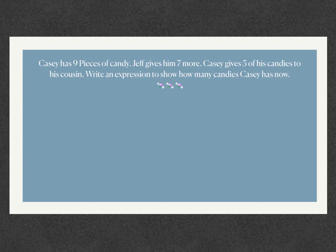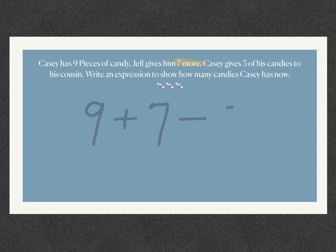Okay, so we know that Casey started with nine pieces of candy, and we know that Jeff gave him seven more. 'More' tells us we're going to add that seven to the nine — that gives us the total number of candies Casey had after Jeff gave him seven. However, Casey was kind enough to give five of his candies to his cousin, so we need to subtract five. Our expression should look like 9 + 7 − 5. Do we need parentheses? With order of operations we move left to right when it's addition and subtraction, so we don't need parentheses here.